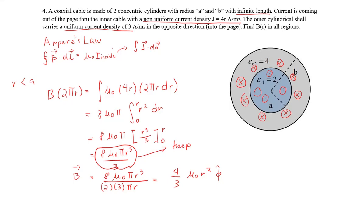Before moving on, remember that the outer shell has a uniform current density of 3. Because the current density is uniform, we don't have to integrate — but we'll do so anyway for practice. Whether you integrate or not, you'll get the same result. Also note that the outer shell's current is in the opposite direction to the inner cylinder, so we have to subtract them.